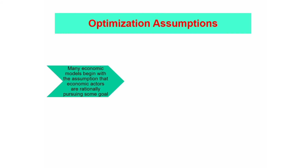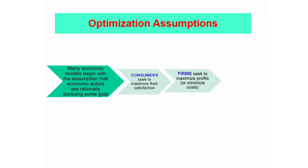In the economy, there are three participants: consumers, firms, and the government. Each of these participants are making rational choices by trying to maximize or optimize their incentives.